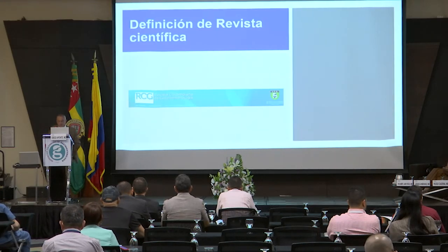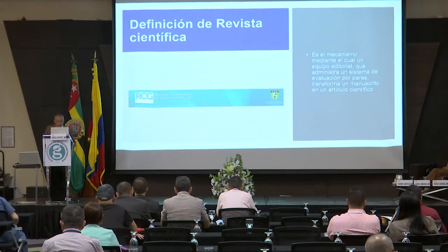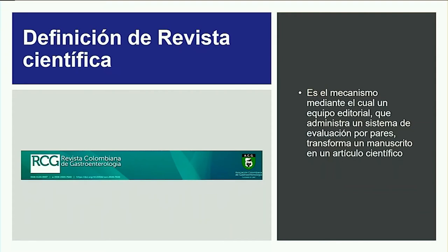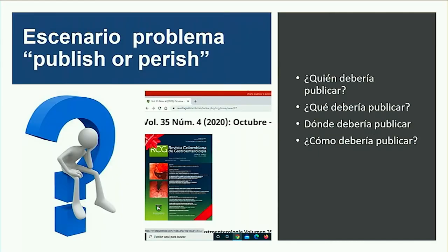Entonces, voy a empezar definiendo lo que es una revista científica. Es el mecanismo mediante el cual un equipo editorial que administra un sistema de evaluación por pares transforma un manuscrito en un artículo científico. Surgen varias preguntas: publish or perish, como crecimos todos, publicar o desaparecer.